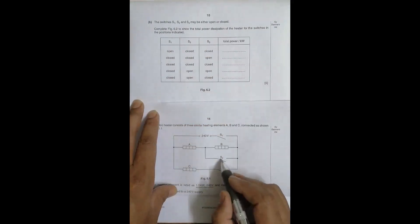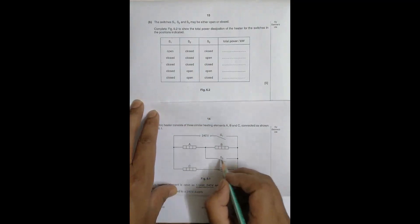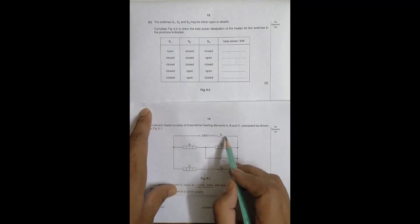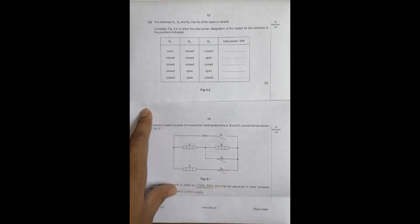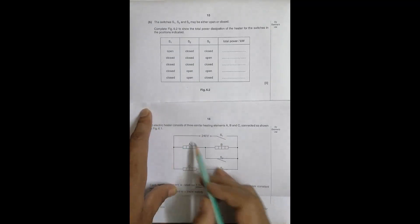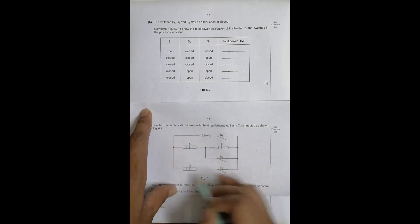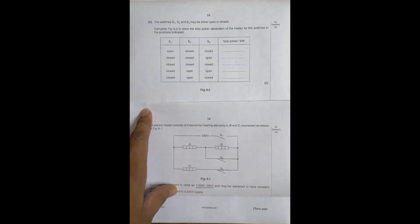First case: S1 is open, S2 and S3 are closed. S3 closed connects C, and S2 is also closed. However, since S1 is open, current cannot flow through the circuit. There is a gap, so no continuous current flows through any of these elements. Therefore the total power dissipation is zero.